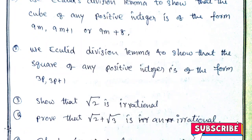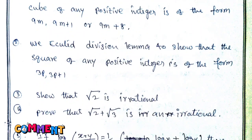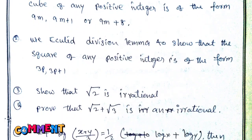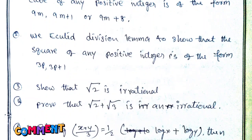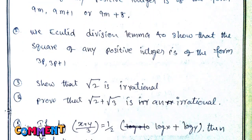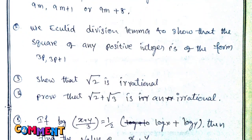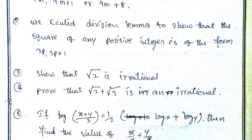Then you have compulsory 8 marks question. Prove that root 2 is an irrational number and root 2 plus root 3 is irrational. The chances are 99.99%. This is the first question of group A.